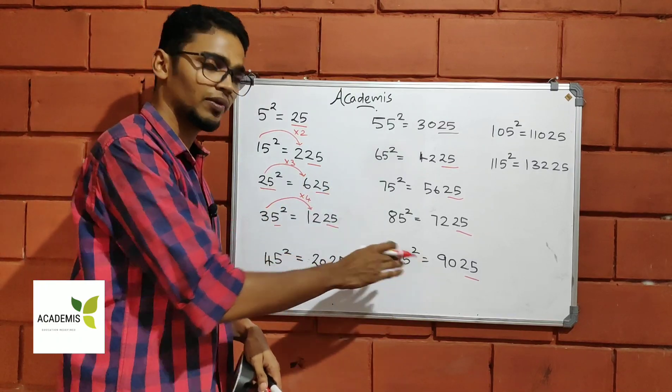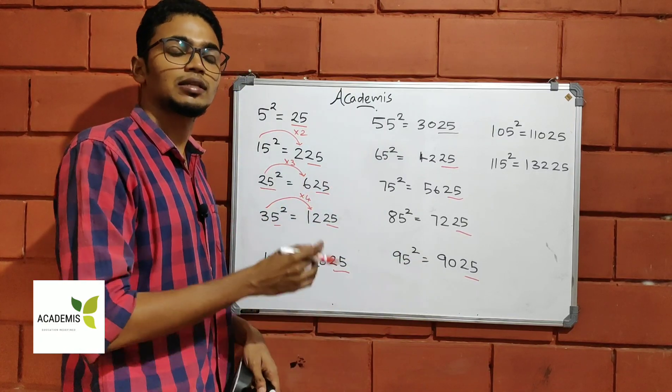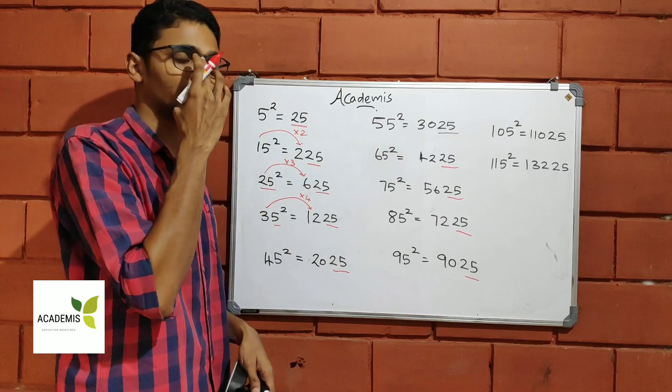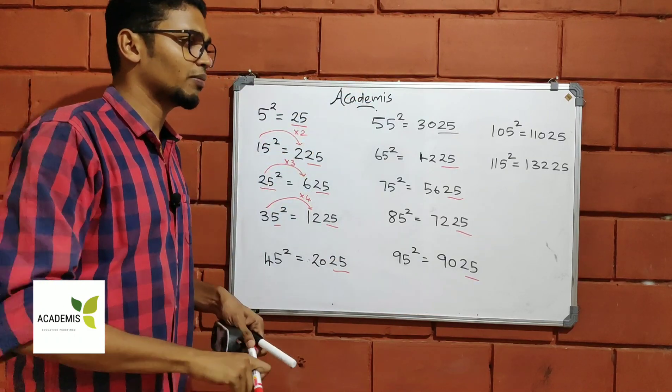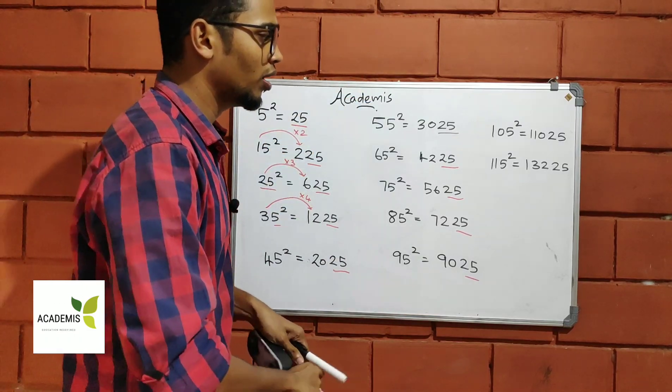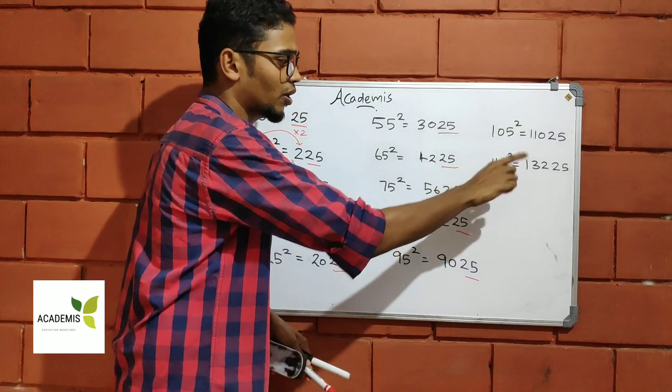We expect to do this easily. For the next value, you need to make the effort. For example, 55 squared — the last part is always 25.